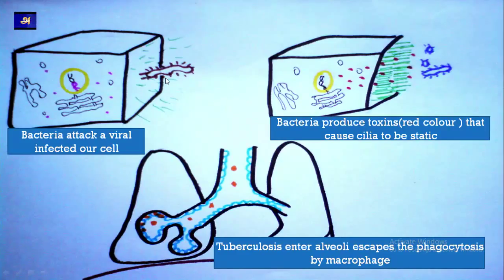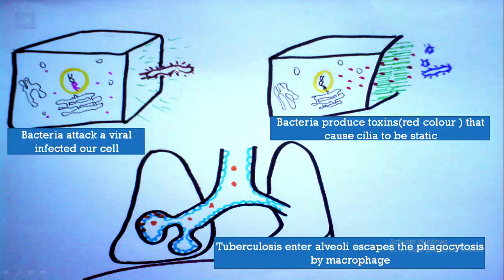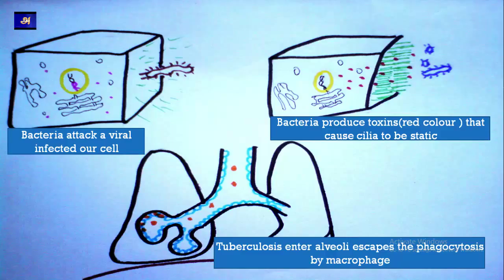How can bacteria enter a virus-infected cell? Earlier we said bacteria cannot enter infected cells, but bacteria that have receptors can attack a viral-infected cell. Here, the blue-colored bacteria are using a brilliant trick — they produce toxins over the receptors of cilia. The cilia are not disintegrated, but they become static and cannot move. Only moving cilia can move mucus upward, but here the cilia are made static, creating entry points for bacteria. Bacteria have special toxins that directly affect us, unlike viruses, which are obligate parasites needing us to survive. Bacteria, however, are enemies that actively infect us.